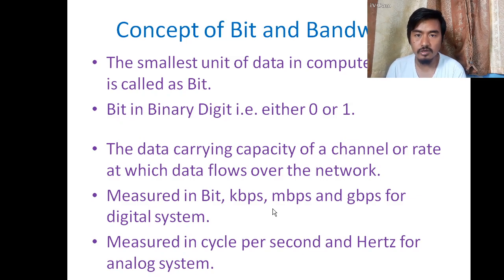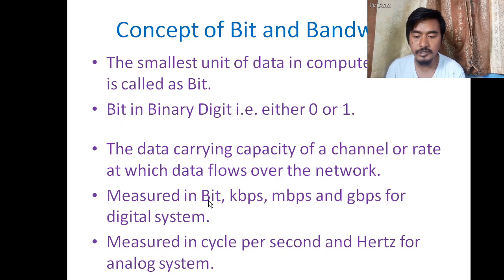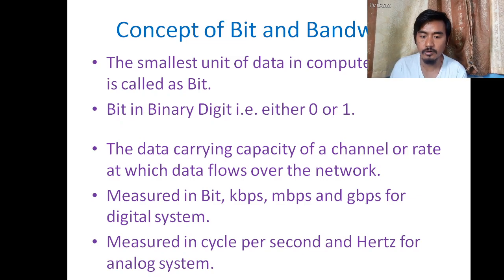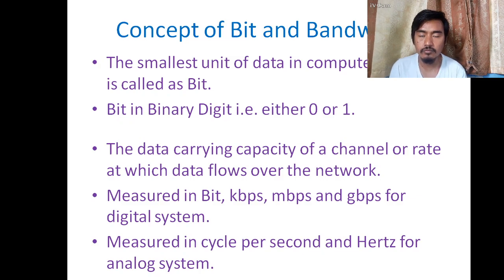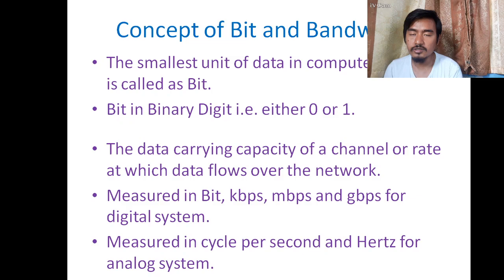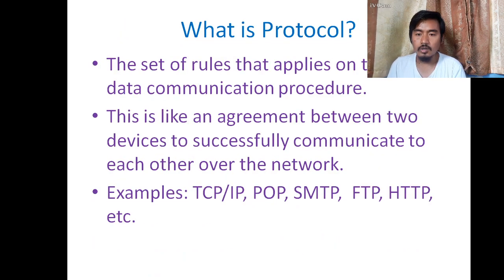Bandwidth is measured in bits per second (bps), kilobits per second (Kbps), megabits per second (Mbps), and gigabits per second (Gbps) for digital systems. For analog systems, such as telephone systems, bandwidth is measured in cycles per second, or Hertz (Hz).